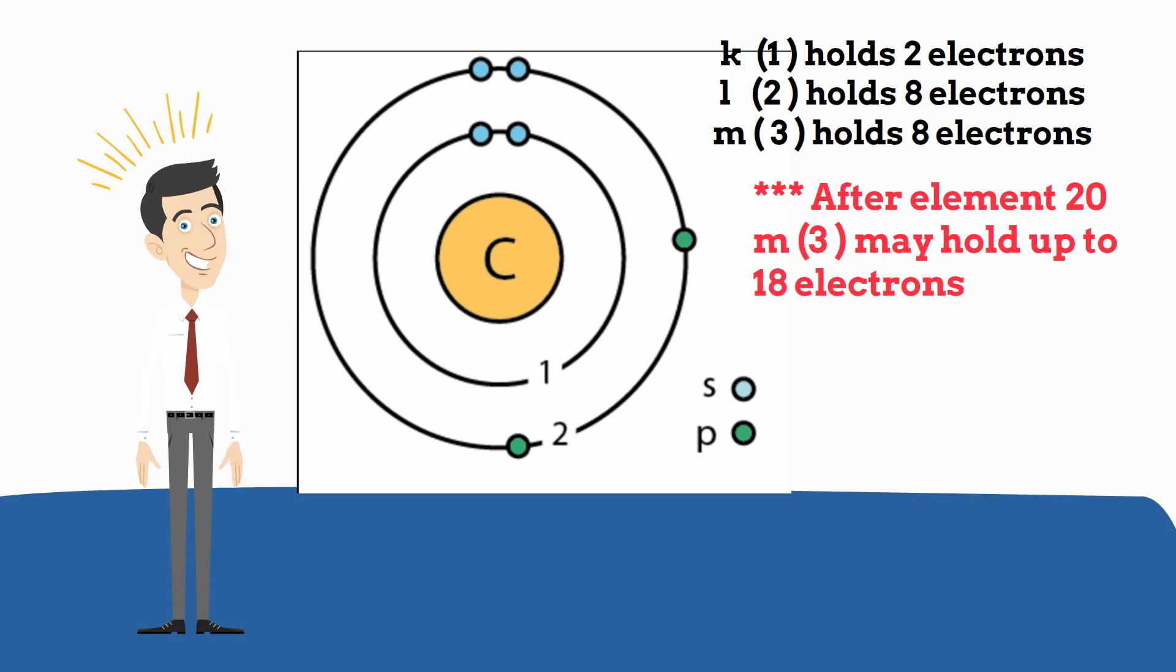You always fill in the lower energy before the outer energy. So since carbon has 6 electrons, you will put 2 electrons in the first energy shell, and then you will put 4 in the second, and it looks like this.